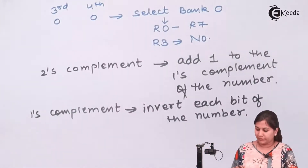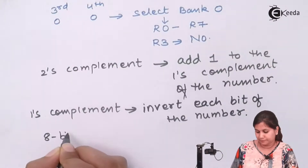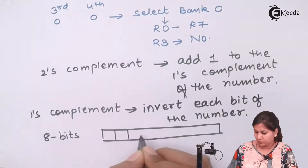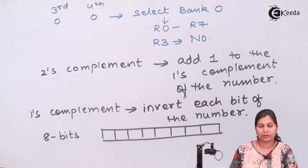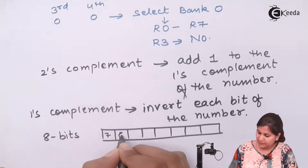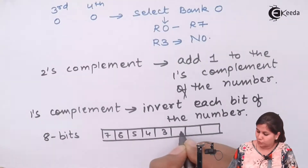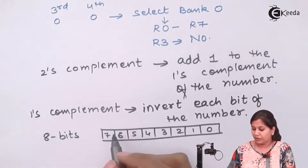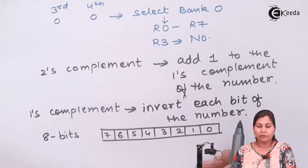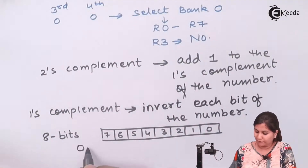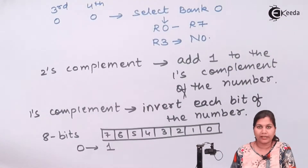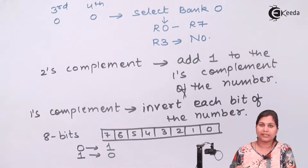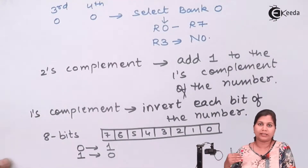Any number can be of 8 bits — bit numbers 7, 6, 5, 4, 3, 2, 1, 0. We have to invert each bit. Invert means if a bit is 0 we make it 1, and if a bit is 1 we make it 0. So inversion: if bit is 0 make it 1, if it is 1 make it 0.